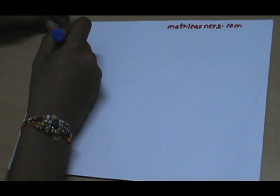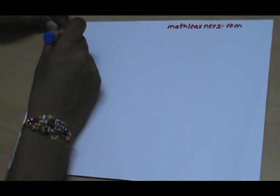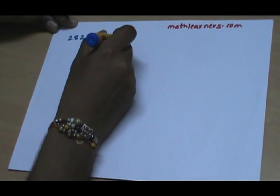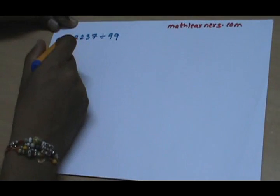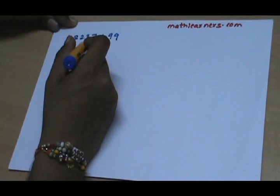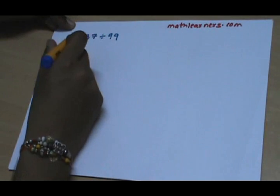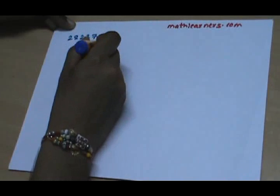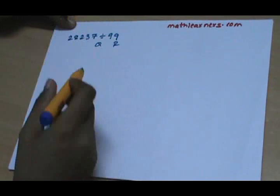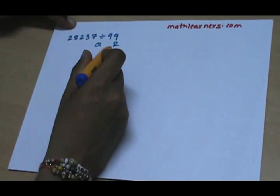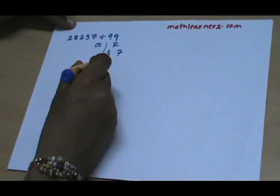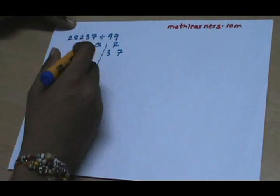Let's say suppose we have to divide 28237 by 99. So the dividend here is 28237 and the divisor is 99. The process of Nikhilam Sutra says that we split the dividend into two parts — quotient and remainder — such that the remainder will have exactly the same number of digits as the divisor. Since the divisor has two digits, the remainder will also have two digits, so 37 is placed in the remainder and the rest of the digits go into the quotient part.